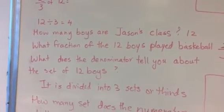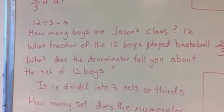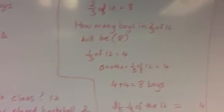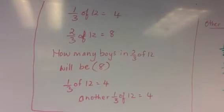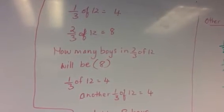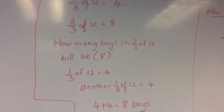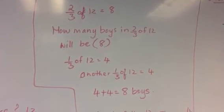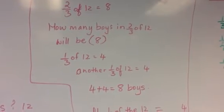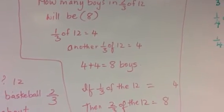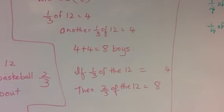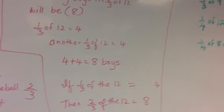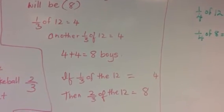So 12 divided by 3. You have to divide the 12 by the denominator to figure out how many sets. So 4. How many boys are in Jason's class? 2 third of 12 is 8. That's how we got 1 third of 12 is 4, 2 third of 12 is 8. How many boys in 2 third of 12 will be 8? 1 third of 12 is 4, another 1 third, 4 plus 4 is 8 boys.